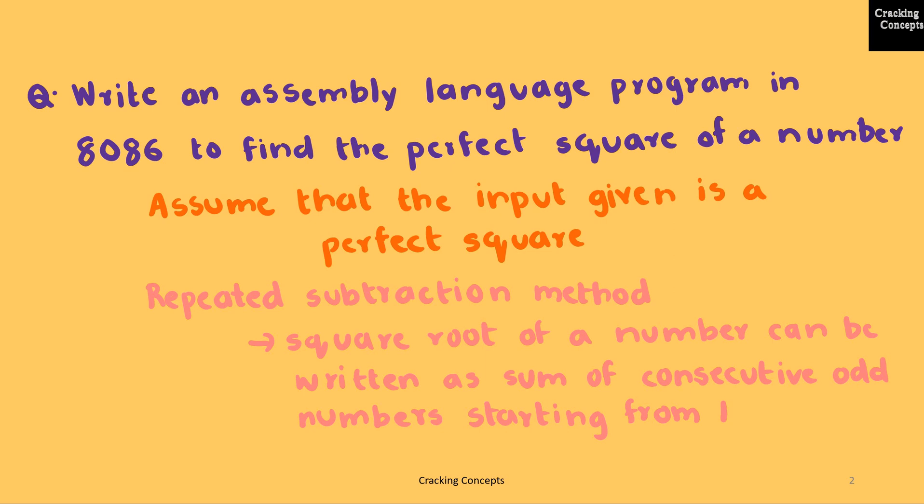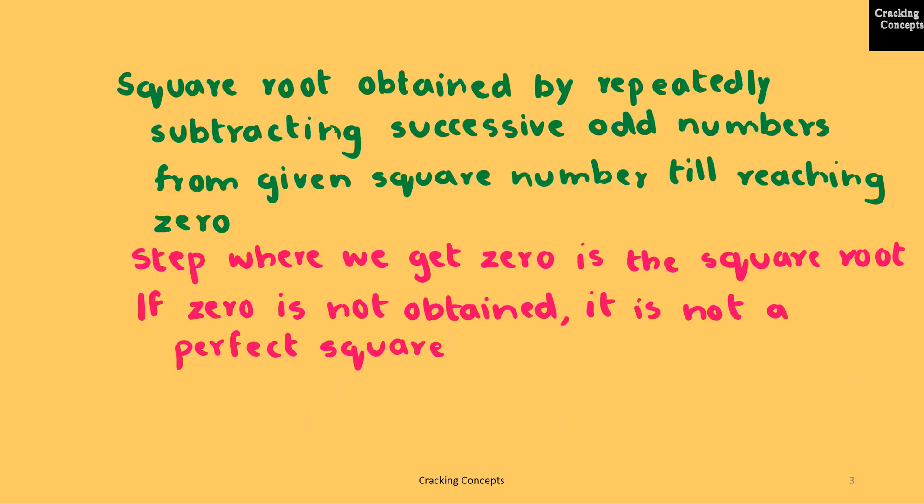For this, we'll be using a technique called the repeated subtraction method. In this method, the square root of a number can be written as sum of consecutive odd numbers starting from 1. We'll repeatedly subtract successive odd numbers from the given square number till it reaches 0.